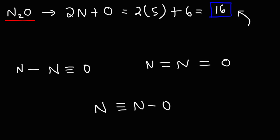One of these resonance structures will be more stable than the others. When oxygen has three bonds it has one lone pair; with two bonds it has two lone pairs; and with one bond it has three lone pairs. The same is true for nitrogen: one bond gives three lone pairs, two bonds gives two lone pairs, and three bonds gives one lone pair.